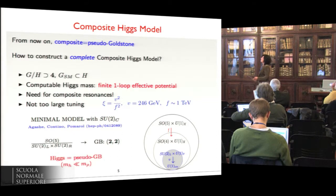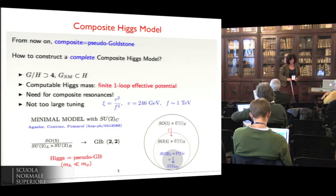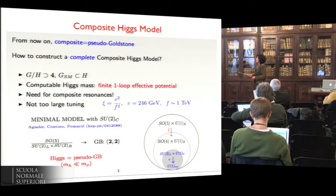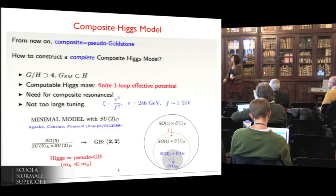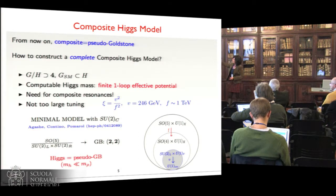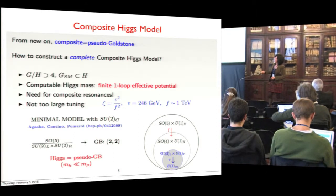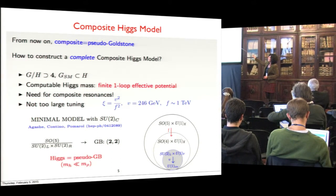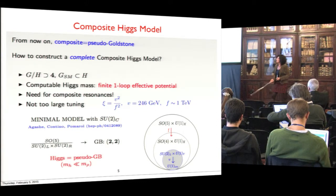To construct a complete composite Higgs model, the basic ingredients we need are four Goldstone bosons, which are the four components of the Higgs doublet. In order to have a computable Higgs mass we need a finite one-loop effective potential. The composite resonances must be described in this scheme, and in order to avoid too large tuning you need the parameter xi — the ratio of the weak scale V to the scale F — to not be too large. So we will choose the F scale in the TeV range.